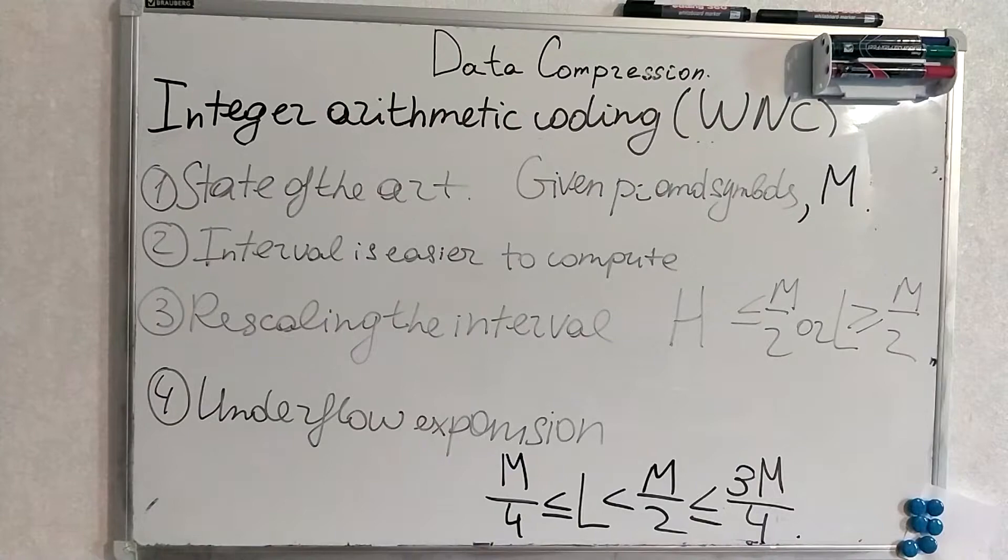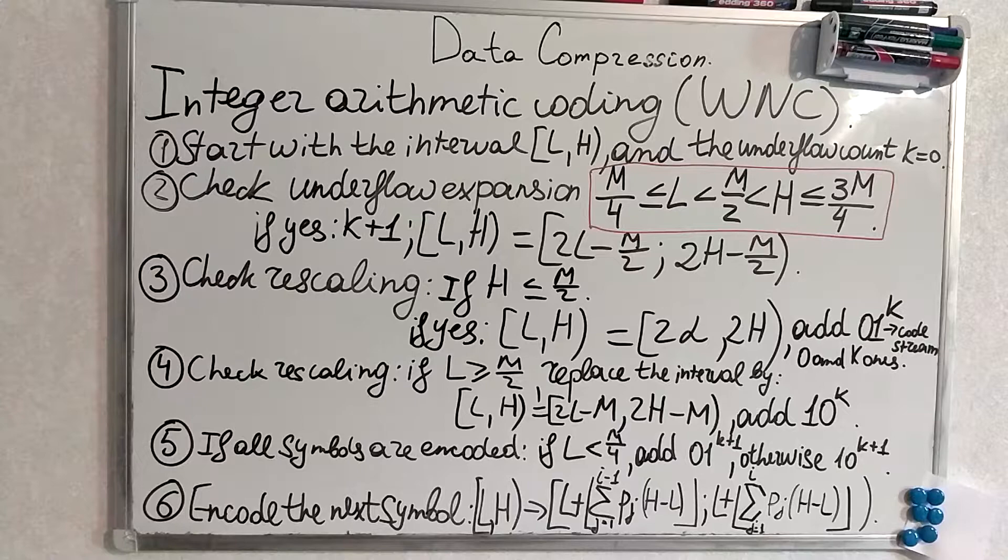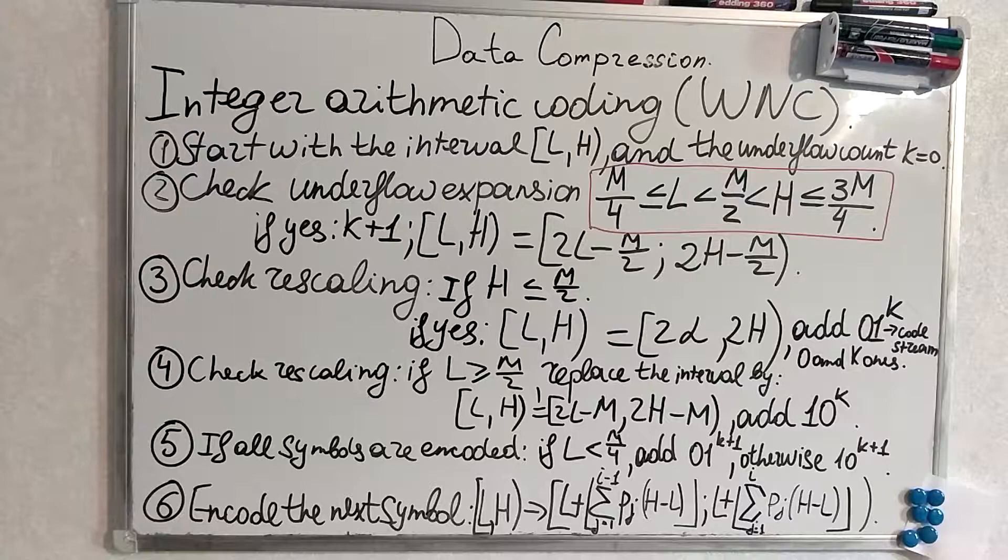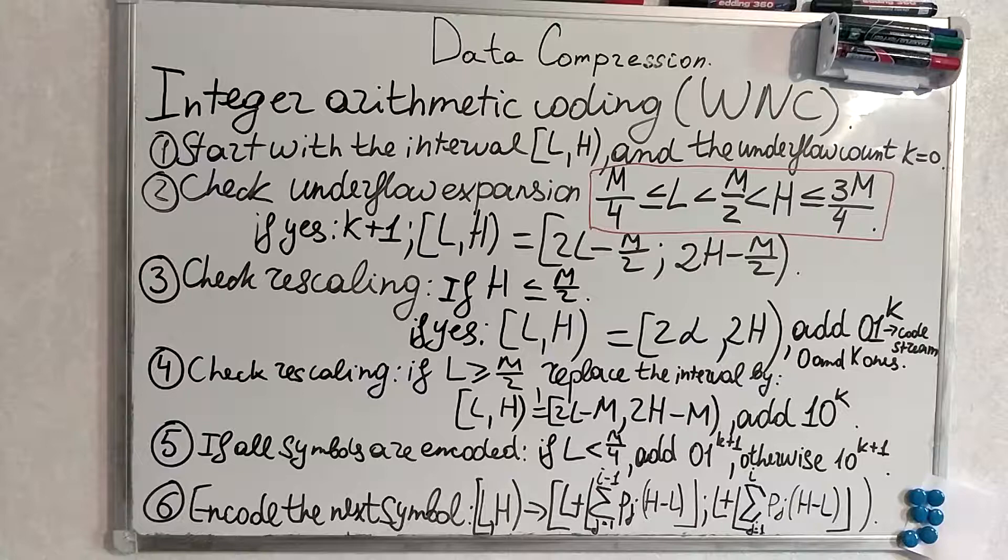So, integer arithmetic coding is a very long and hard, one of the hardest algorithms in this series of videos. It's also called WNC. And we are going to go through the 6 steps.